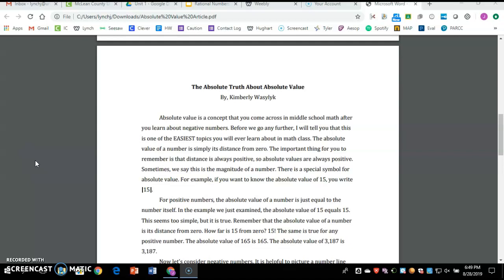The absolute value of a number is simply its distance from zero. The important thing for you to remember is that distance is always positive, so absolute value is always positive. Sometimes we say this is the magnitude of a number.